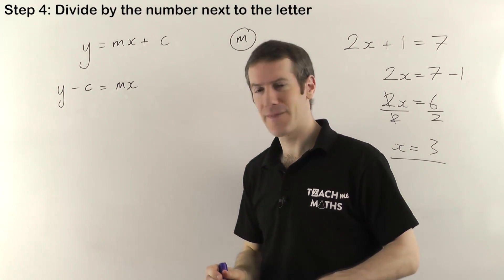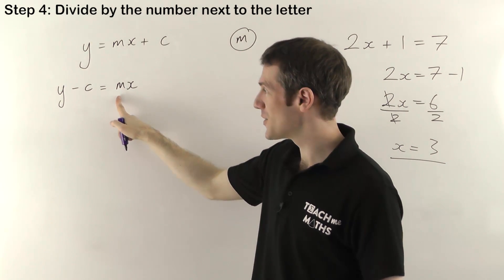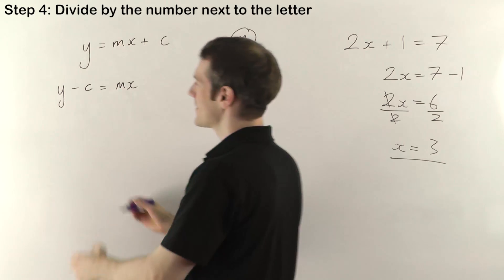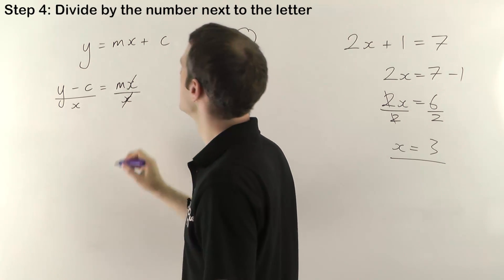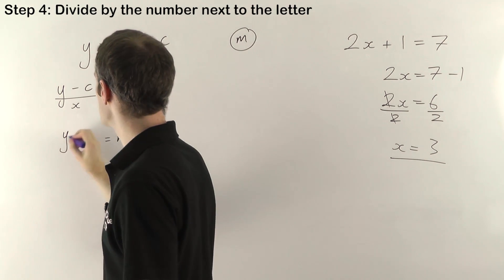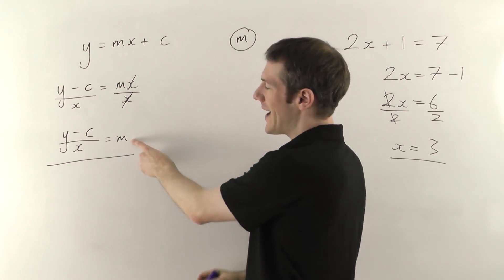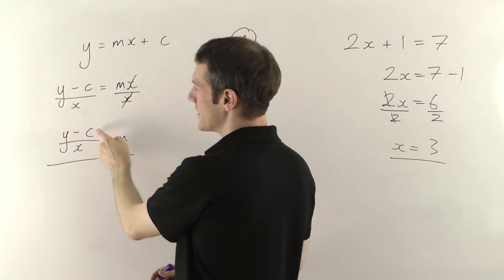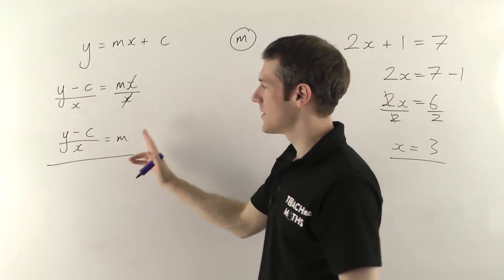Final step: divide by the number next to the letter. We care about m, so divide by the number next to it — and that's x, because remember all letters are numbers. Divide everything by x on both sides. Those x's cancel, leaving m by itself. Don't try to mess around with what you get on the left — just leave it as a fraction. You can't work it out because you don't know what y, c, and x are. So m equals (y minus c) over x. We've rearranged it; m is by itself. If you were doing experiments, you could substitute values for x, y, and c to work out different gradients for different data sets.